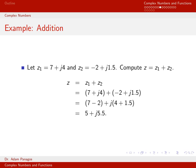To compute this sum, I replace z1 and z2 with what they're equal to. For complex number addition, we take the real parts — 7 and negative 2 — and put those together, then take the imaginary parts — 4 and 1.5 — and add those together. So 7 minus 2 is 5, and 4 plus 1.5 is 5.5. The sum z equals 5 plus j times 5.5.